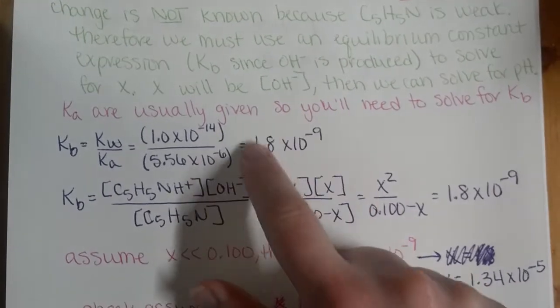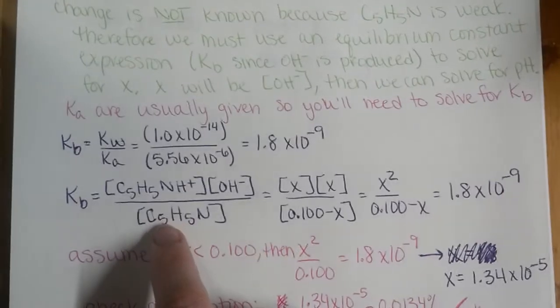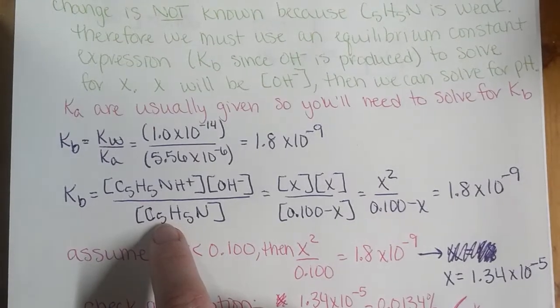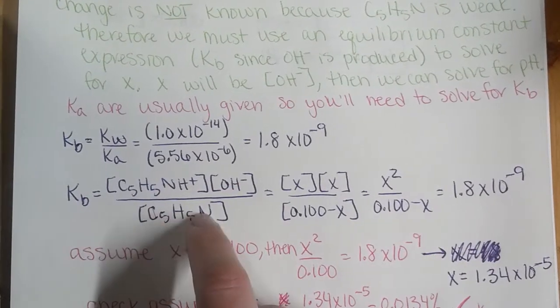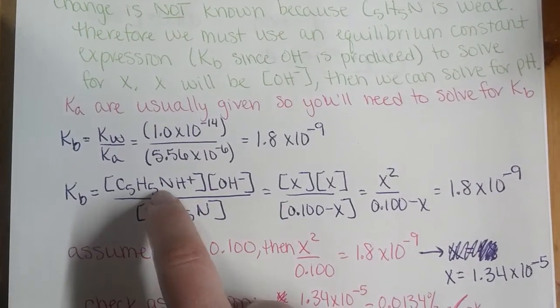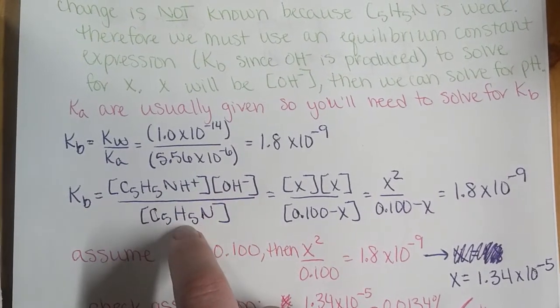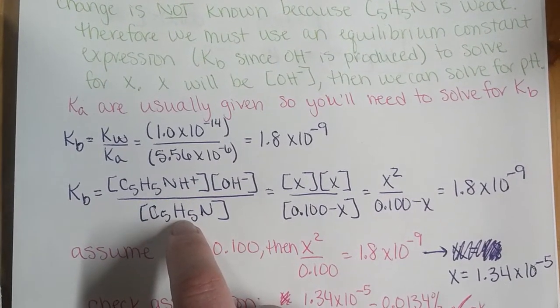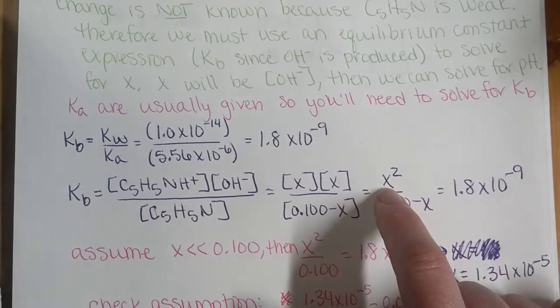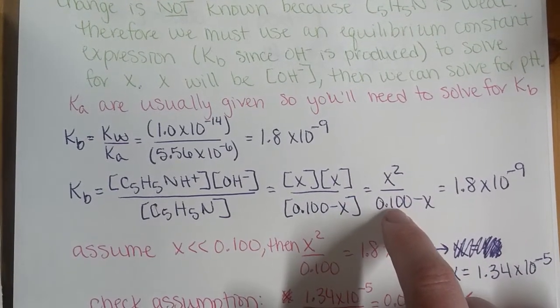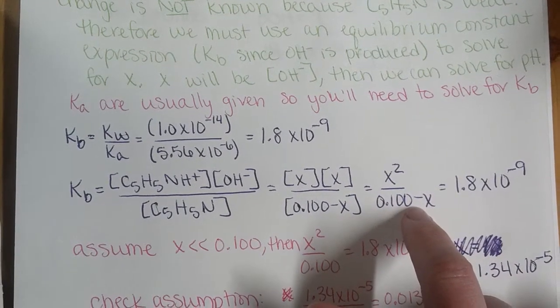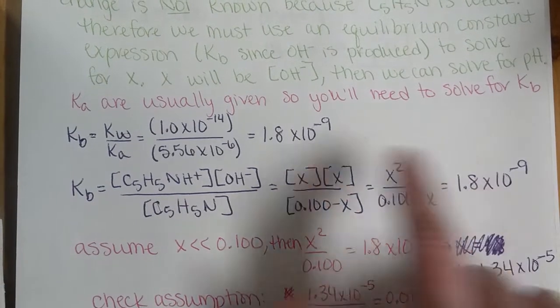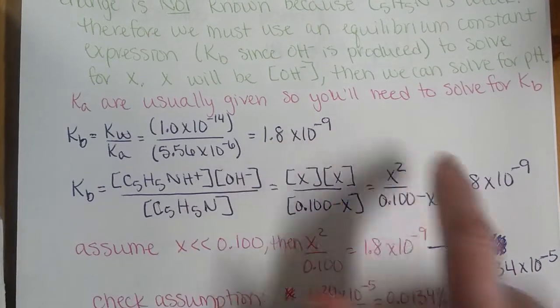So we can now use this value with our equilibrium constant expression. We have products over reactants, so our conjugate acid times hydroxide ion divided by our weak base. We end up with X squared over 0.100 minus X, and that's equal to our Kb value that we just solved for.